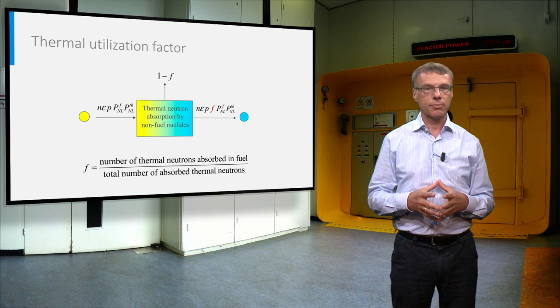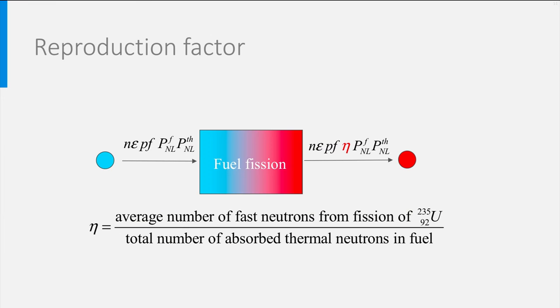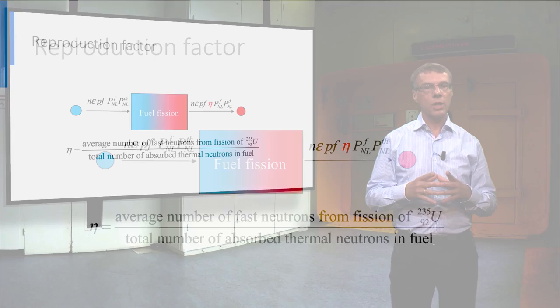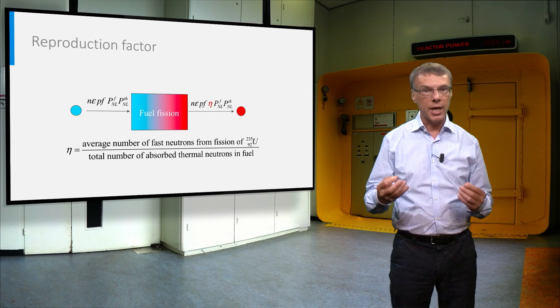And finally, we can calculate the number of fission neutrons released when one neutron is absorbed in the fuel. This factor is called the neutron reproduction factor. Note that this is less than the neutrons released in a fission event, because part of the neutrons absorbed in the fuel will not lead to a fission event. The neutrons absorbed by uranium-238 will disappear without fission.